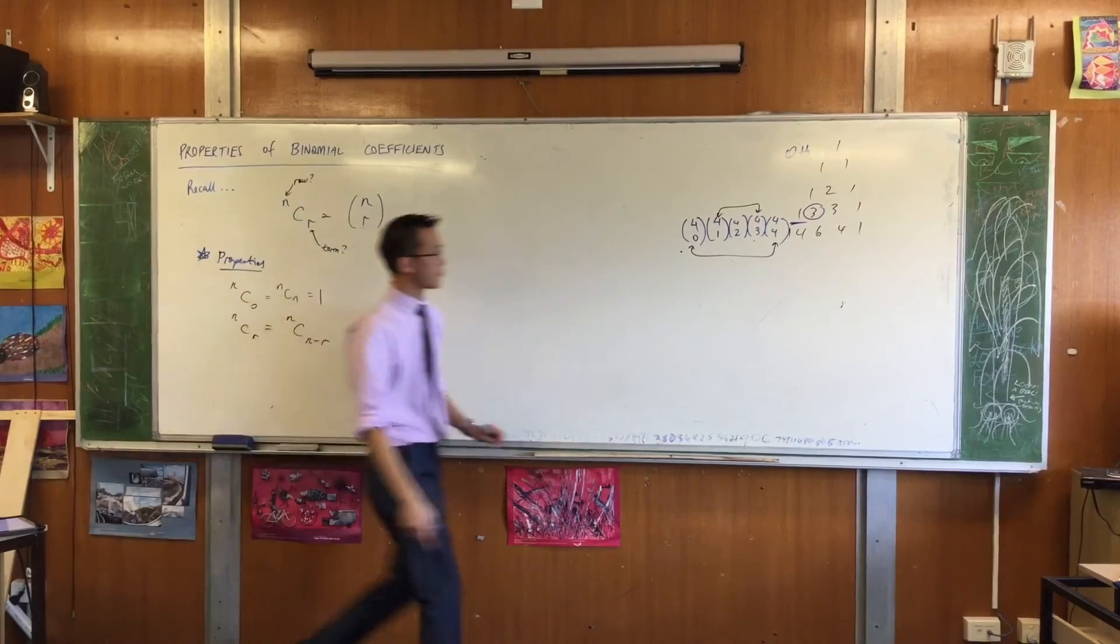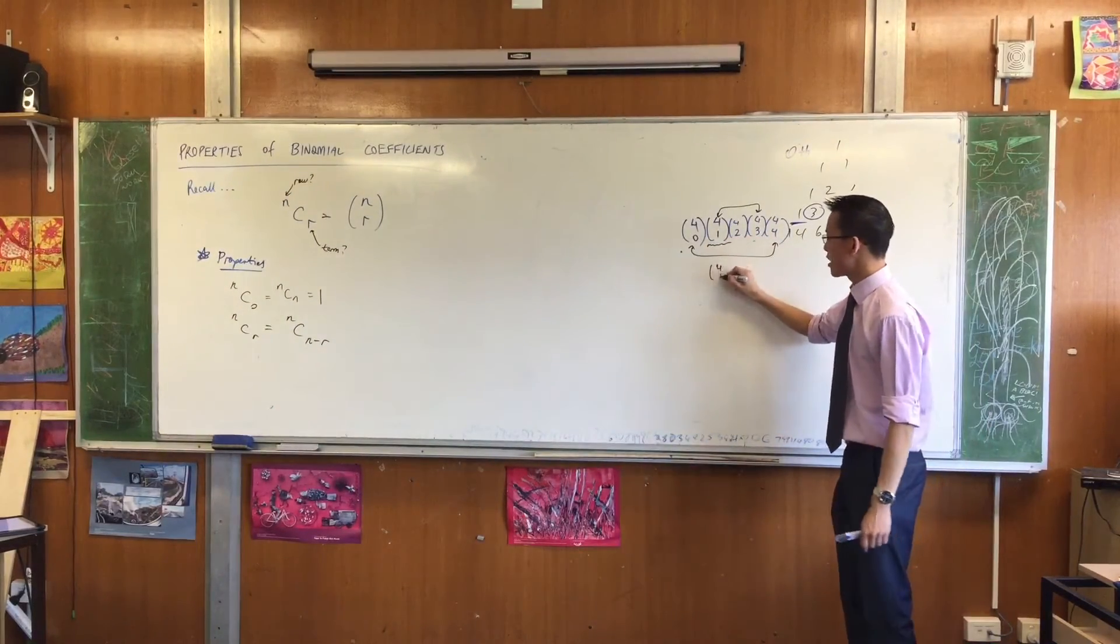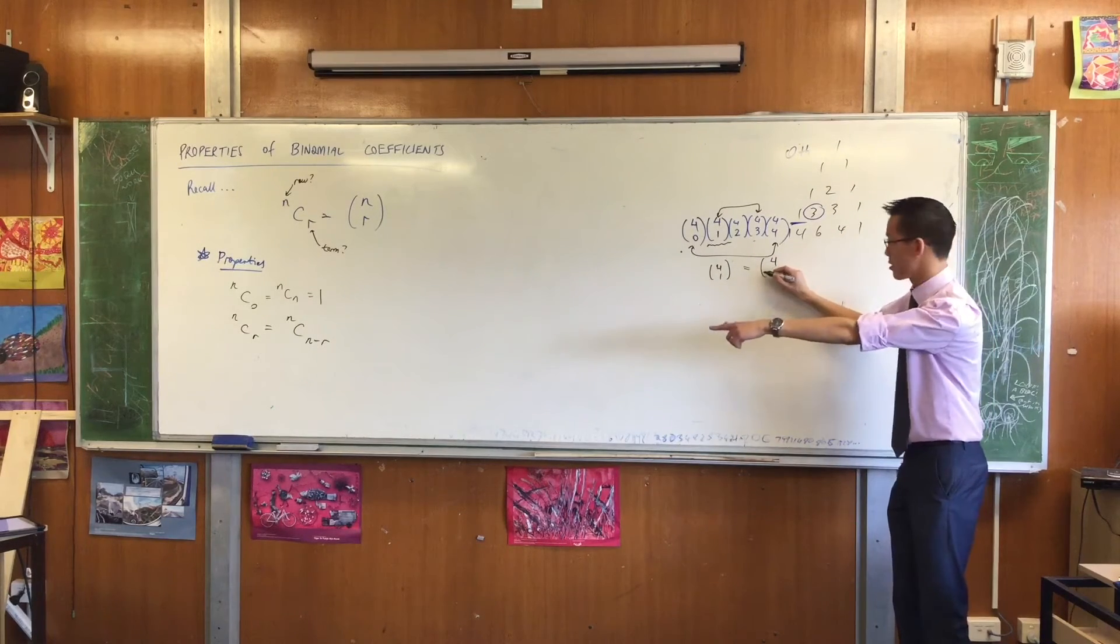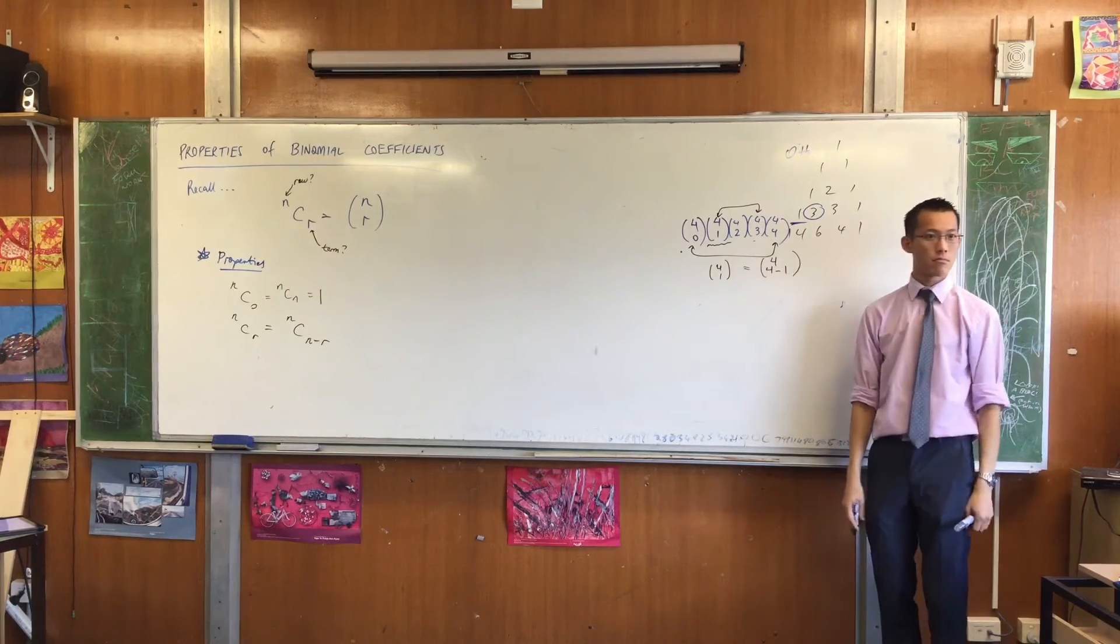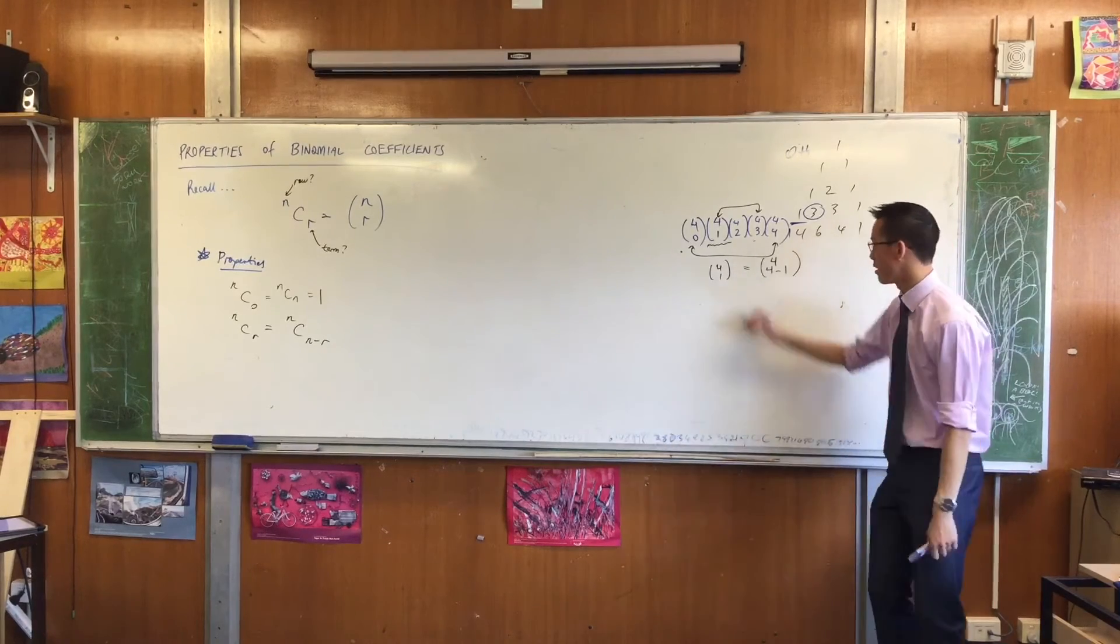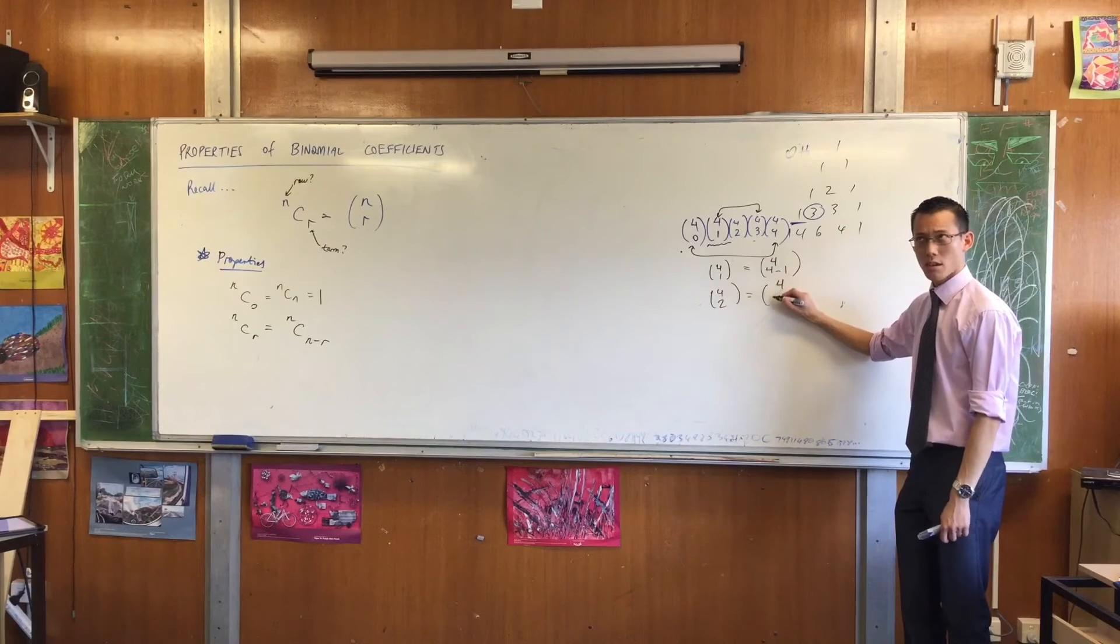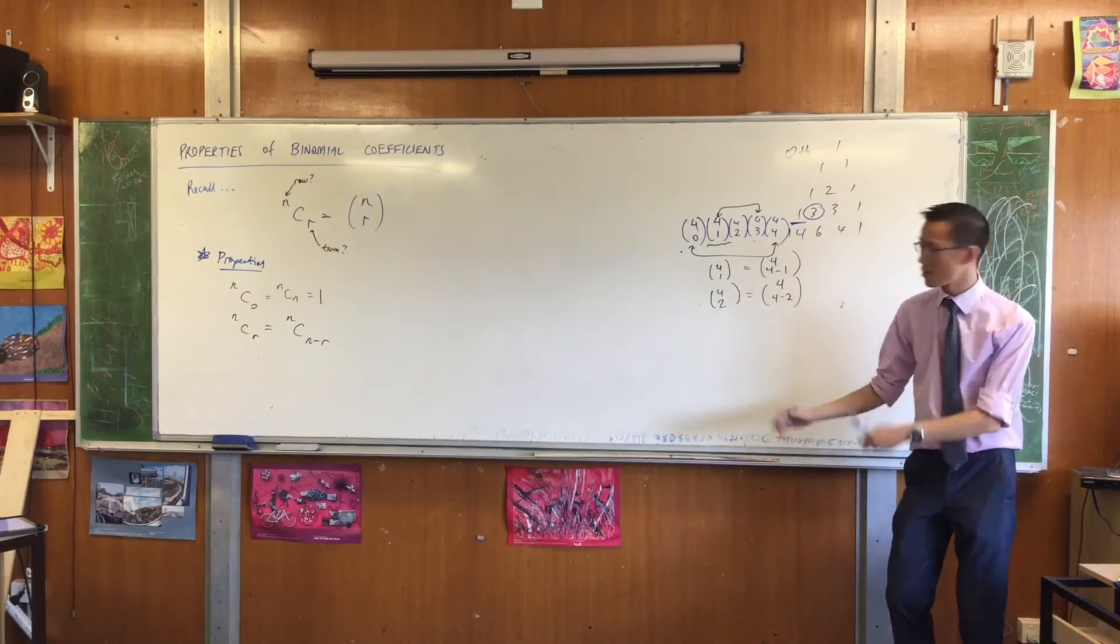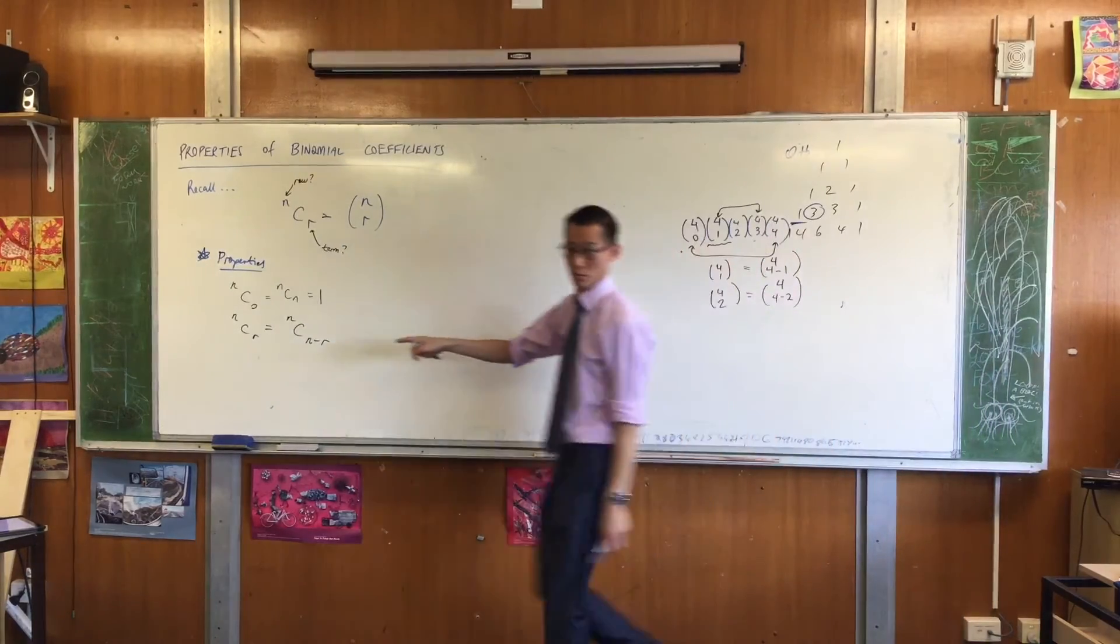4C1, 4C1 is equal to 4C, what's n in this case? 4 minus 1. Do you agree with that? In fact, even when you get to the middle term, which doesn't seem to have a partner, you get 4C2 equals 4C(4 minus 2). Well that's 2, isn't it? Does that make sense? So this is a way of stating the symmetry for this case, but this is far more general. Alright, property 1, property 2. I've got 4 for you, so we're halfway there.